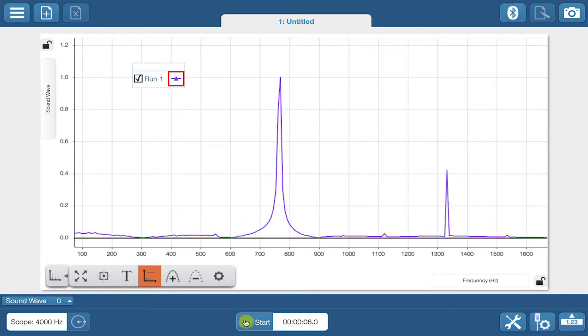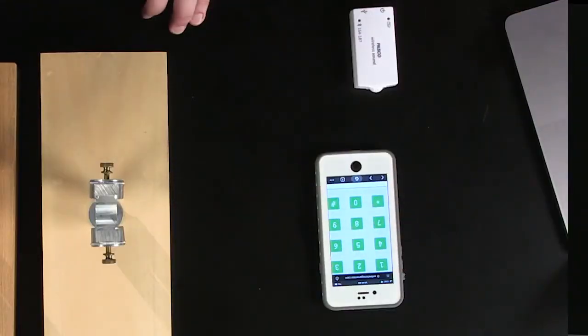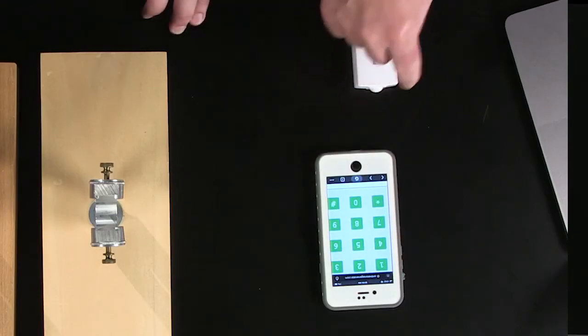See the two main frequencies? Two frequencies are present when you dial any number. The first frequency is shared by the numbers in the same row on the dial pad. The second frequency is shared by those in the same column.